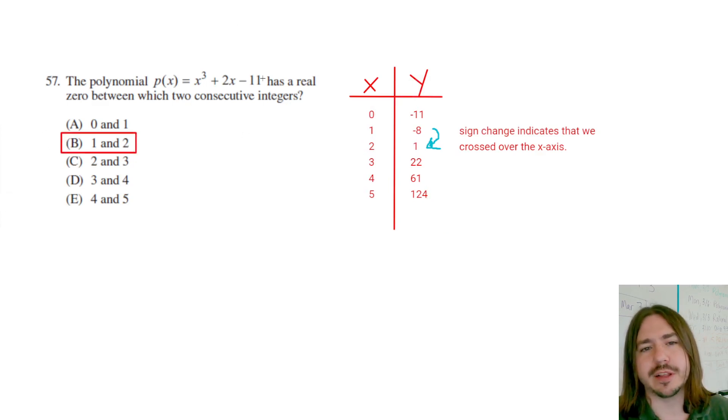If you have a similar problem like this, and it's asking where is the real zero, you want to look for the sign change. It doesn't necessarily need to change from negative to positive. It could go from positive to negative, but either way, you're looking for some evidence that you're crossing over the x-axis. That's it for number 57. Thanks for watching, and y'all have a great day.